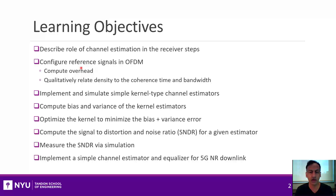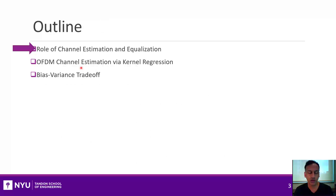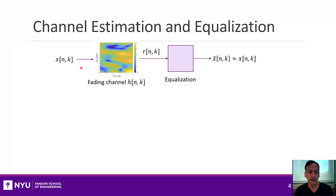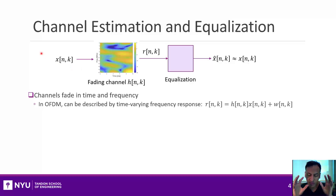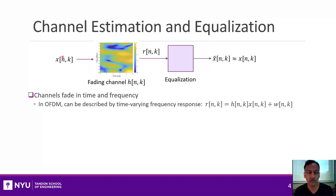Let's start the unit. The first thing I want to do before we get into the main material is talk about exactly what we mean by channel estimation and where it resides in the overall chain of steps at a receiver. So, what is channel estimation? As we've seen continuously in this class, channels fade in time and frequency. In OFDM, you can visualize that as a grid where time is on the x-axis and frequency is on the y-axis, and that channel is changing. What happens at the receiver is that the transmitted symbols are getting modulated by this channel.